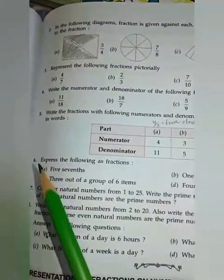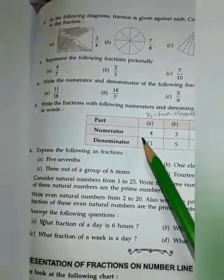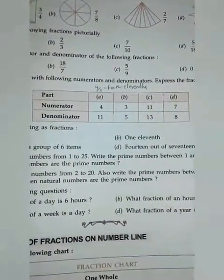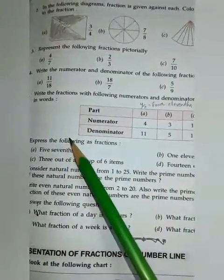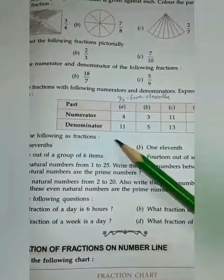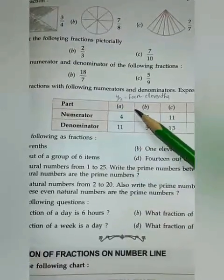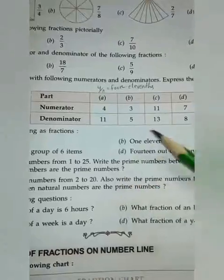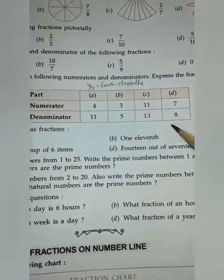Question 5: Write the fractions with the following numerators and denominators and express the fractions obtained in words. 4/11 — write as four elevenths. 3/5 — three fifths. 11/13 — eleven thirteenths. 7/8 — seven eighths.